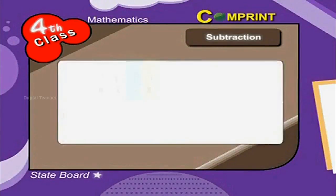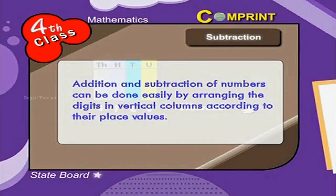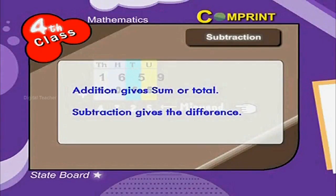Points to remember. Addition and subtraction of numbers can be done easily by arranging the digits in vertical columns according to their place values. Addition gives sum or total. Subtraction gives the difference.